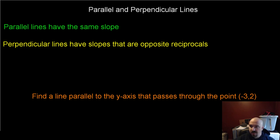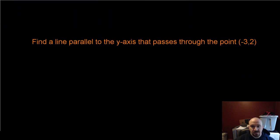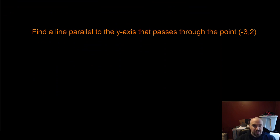Let's take a look at a few here. I've got four that I'm going to do. Some are a little bit easier than others. Find a line parallel to the y-axis that passes through the point (-3, 2).